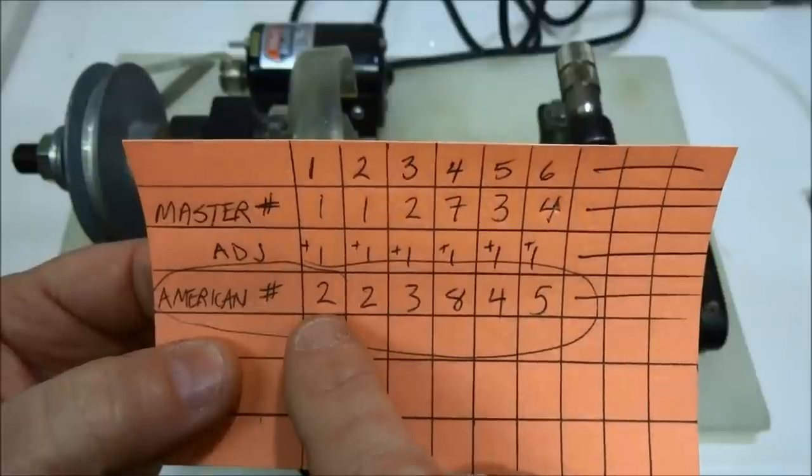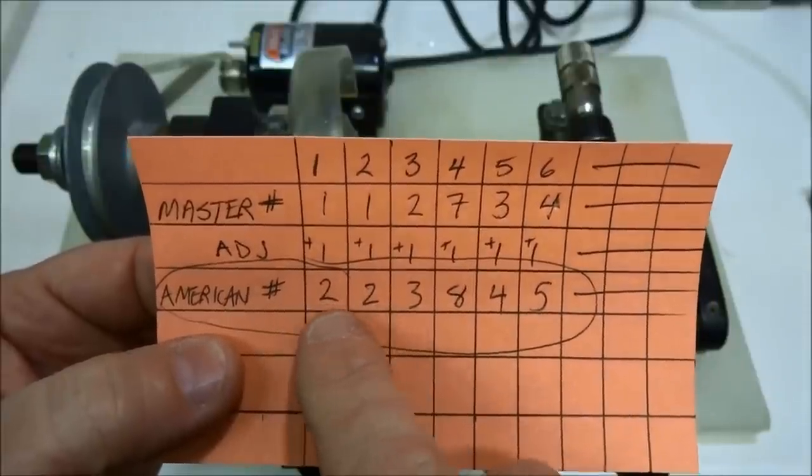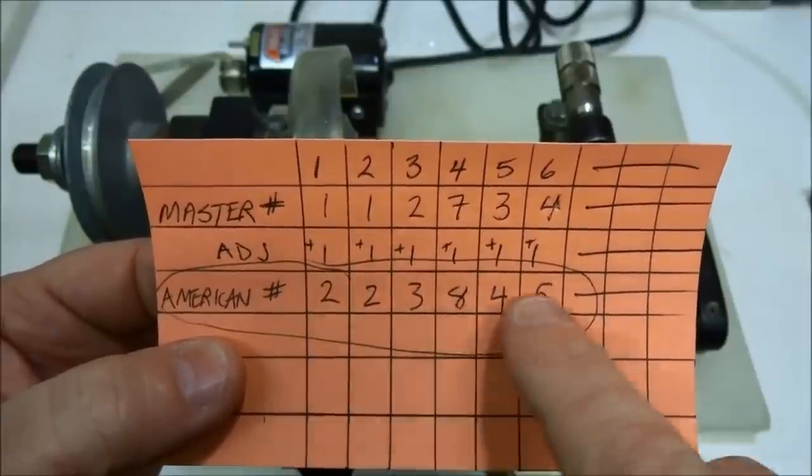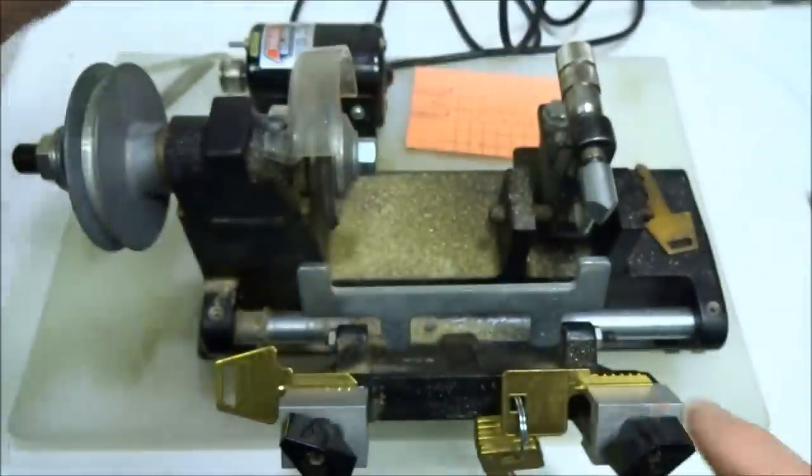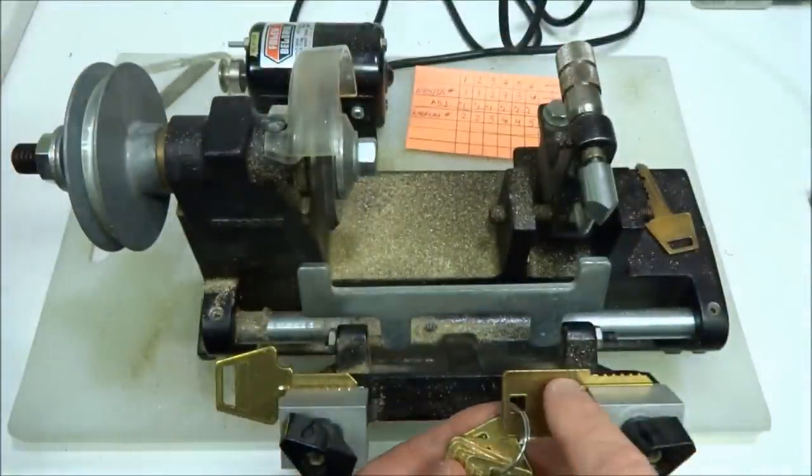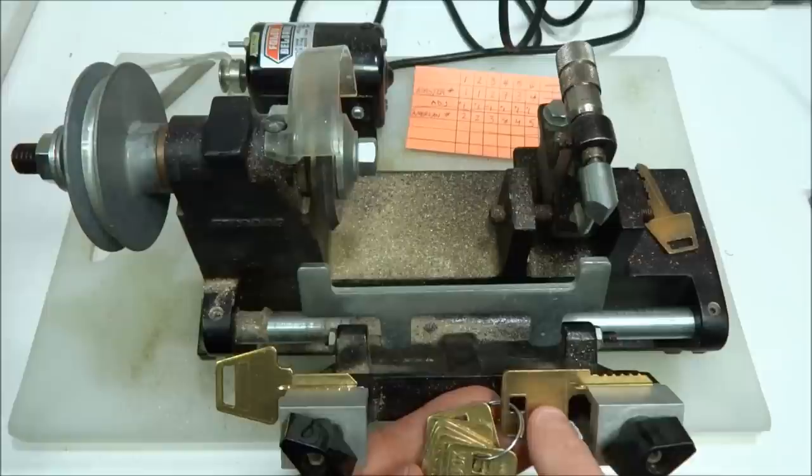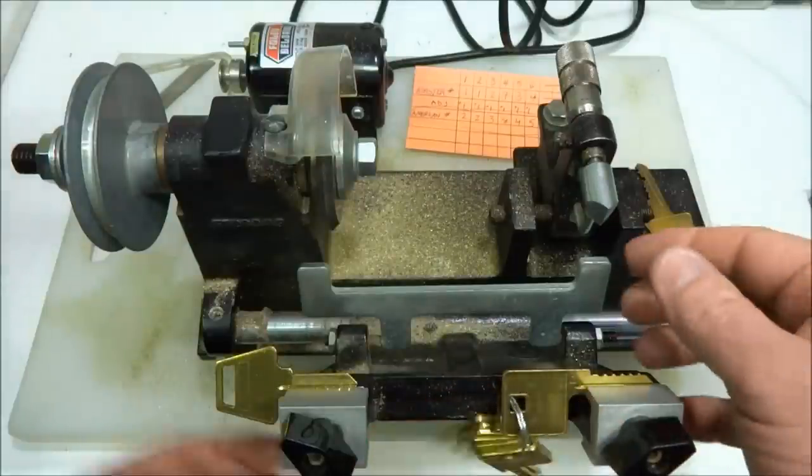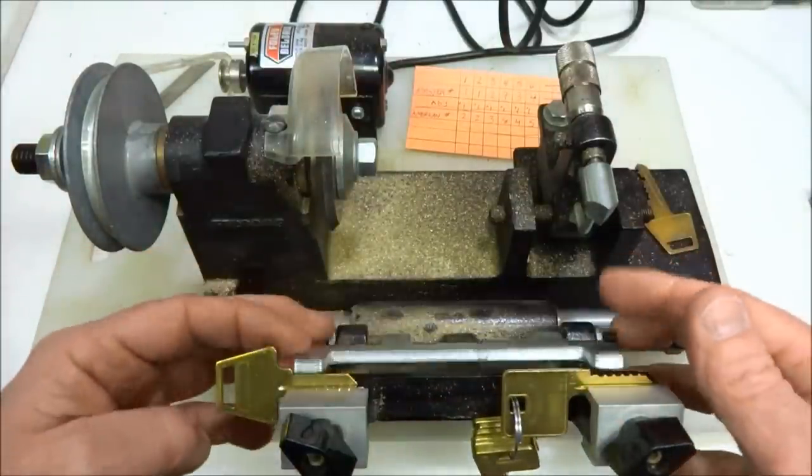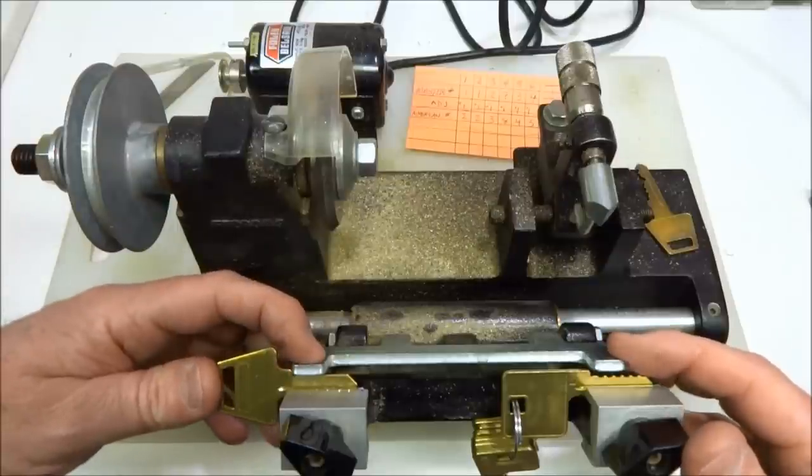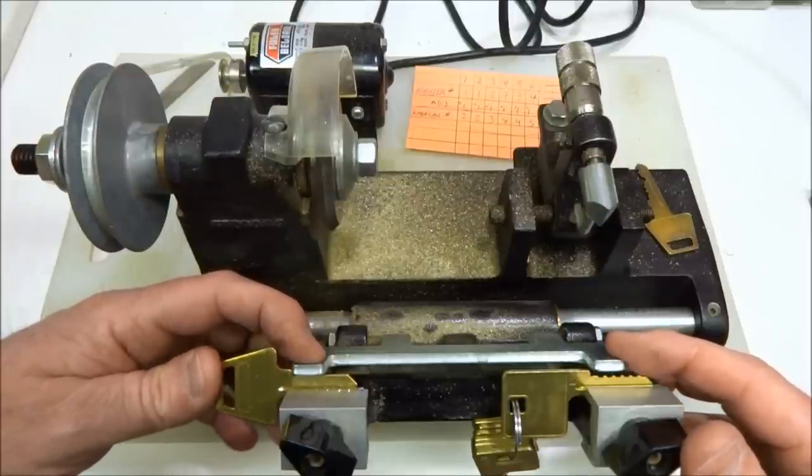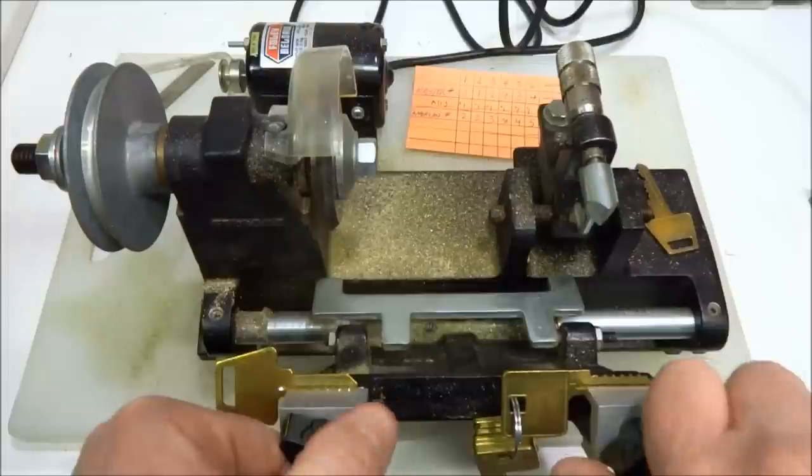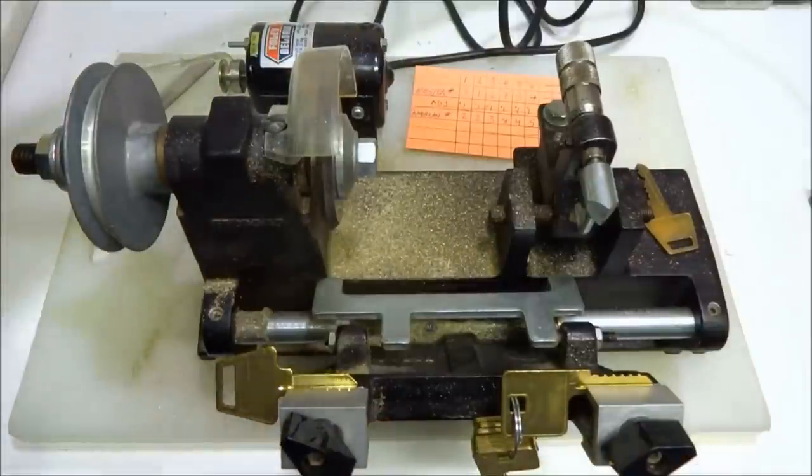We got a six pin lock. We're going to cut all six positions to the shallowest cut, and the shallowest cut is two in the first two positions. But we're going to cut the entire key to depth two. We've taken our depth and space keys, put number two inside there, put our blank key on the left, aligned them, and made sure everything's clamped up. Let's turn it on and cut everything to depth.